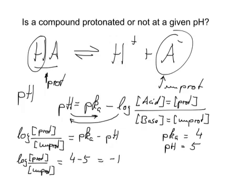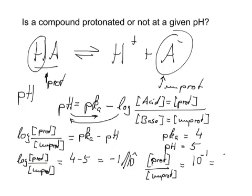And we now can ask not what is the log of this, but what is the actual ratio of protonated to unprotonated. So we take both sides, 10 to the power of, and we get protonated form over unprotonated form equals 10 to the power of minus 1. And that is 0.1. And that, of course, is the same as 1 over 10.